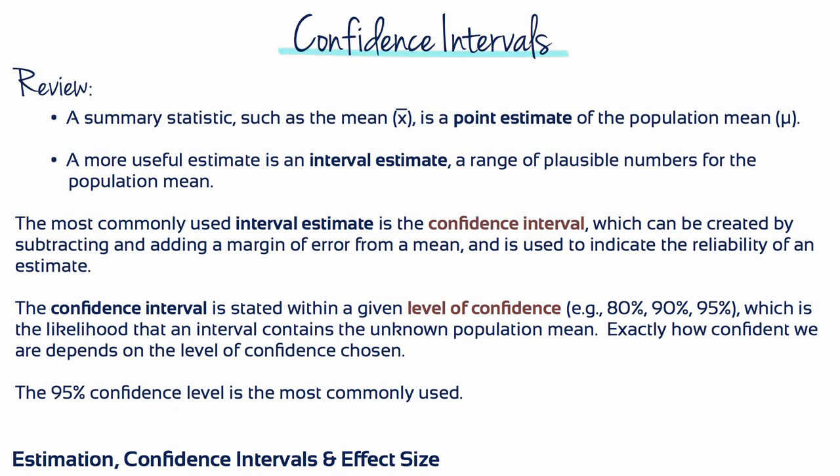To review, a summary statistic such as the sample mean is used as a point estimate of the population mean. A more useful estimate is the interval estimate, which provides a range of plausible numbers for the population mean. The most commonly used interval estimate is the confidence interval, which can be created by subtracting and adding a margin of error from a mean, and is used to indicate the reliability of an estimate. The confidence interval is stated within a given level of confidence, for example 80%, 90%, or 95%, which is the likelihood that an interval contains the unknown population mean.